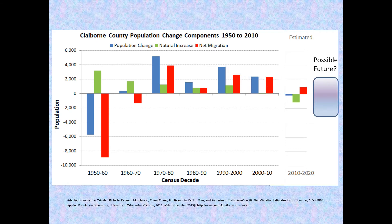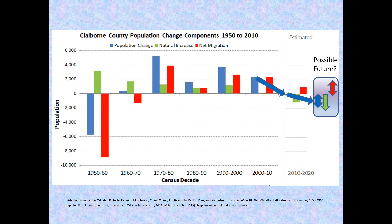Let us challenge our imagination and consider what a future beyond 2020 may look like. Natural increase will probably continue deeper into negative territory as the baby boom ages fully into senior years, resulting in more deaths, possibly along with a trend of lower births. Hard to say where net migration will go — it may increase, but it may also decrease or continue relatively steady. Whatever the case, population change may continue to decrease further into the negative, due especially to the pull downward of greater negative natural increase.